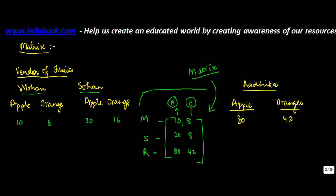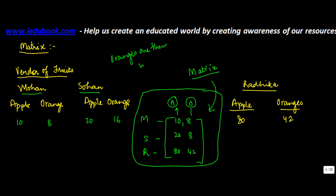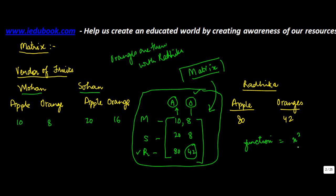By looking at this matrix, a third party can quickly find information — for example, how many oranges Radhika has. You look at the oranges column, find Radhika's row, and read it off. The presentation of information becomes much easier — that is the purpose behind a matrix. A matrix can contain numbers or any kind of functions, such as x², y², z², or x, y, z.